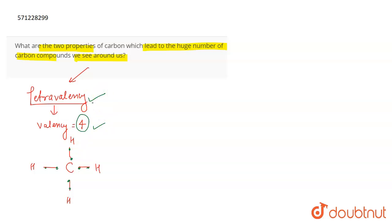It can combine with four other atoms around it. The next property of carbon which is responsible for that is catenation. So catenation is the ability of the atom to combine with itself and lead to the formation of long chains.